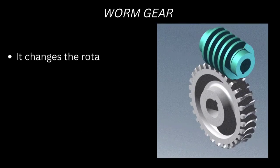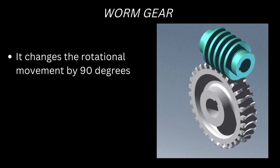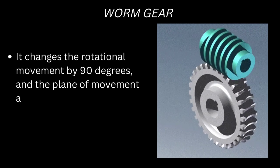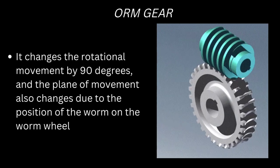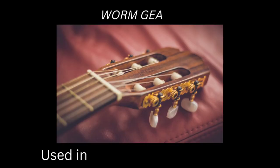It changes the rotational movement by 90 degrees, and the plane of movement also changes due to the position of the worm on the worm wheel. Worm gears are used in musical instruments such as guitars.